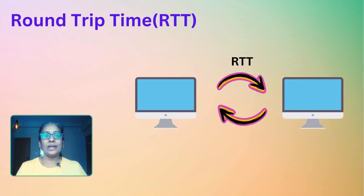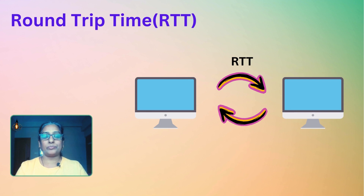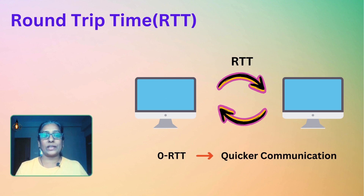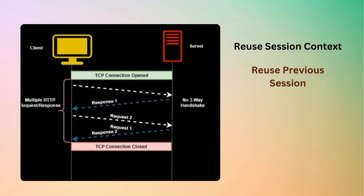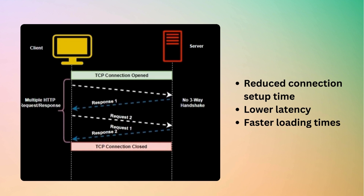Round-trip time, or RTT, includes the message propagation time to and from the server. In the context of networking and web performance, RTT is a critical metric because it affects the responsiveness of applications. Lower RTT values indicate quicker communication and lower latency. Zero RTT is a notable feature of the QUIC protocol used in HTTP3. With zero RTT, a client can send data to the server in the very first message of the connection without waiting for the round-trip time — there is no three-way handshake process in HTTP3. Zero RTT is achieved by using previously established session information or by resuming a previous session, significantly reducing the time needed for initial connection setup, leading to lower latency and faster loading times for web pages and resources.